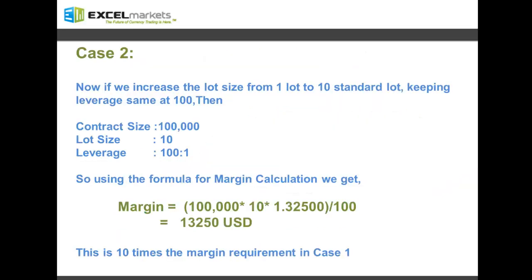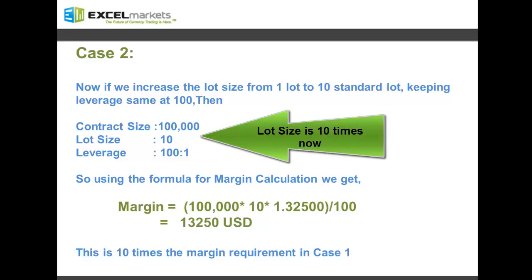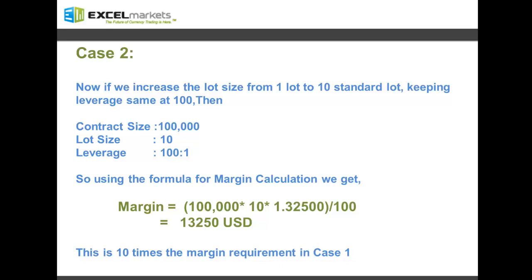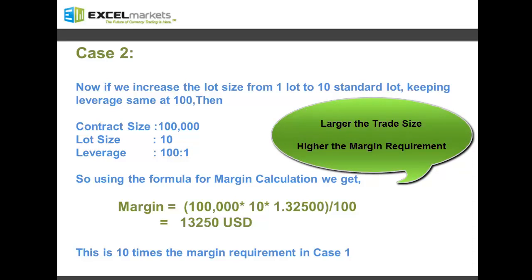Now let's consider case two. If we increase the lot size from one standard lot to 10 standard lots — increasing the size of our trade position 10 times while keeping the leverage the same at 100:1 — the contract size remains 100,000, lot size is 10, and leverage is constant at 100:1. Using the same formula, margin comes out to be 13,250 US dollars, which is 10 times the margin requirement as in case one. Hence, by increasing the size of your trade position, you have increased the margin requirement. Therefore, margin is directly proportional to the lot size traded.